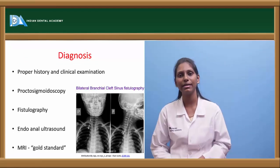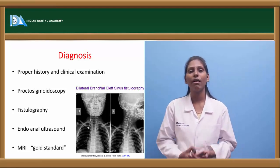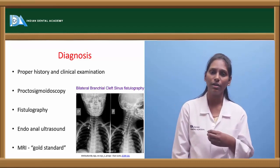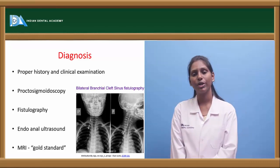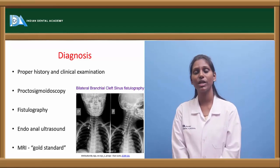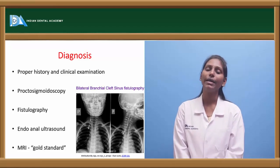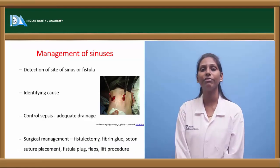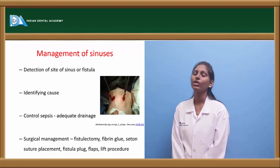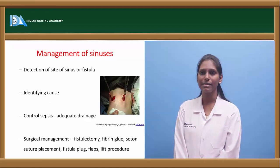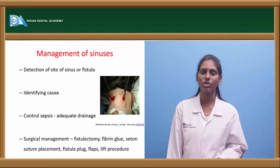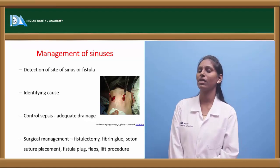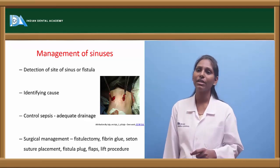When talking about diagnosis — proper history and clinical examination are essential. Techniques like proctosigmoidoscopy give good insight into the type of fistula. Fistulography and endoanal ultrasound are also used; however, MRI is the gold standard in identifying sinuses and fistulas. In management, always treat the underlying cause — detect and treat it, identify the site of sinus or fistula, and control sepsis.